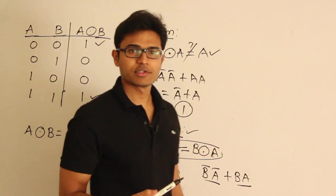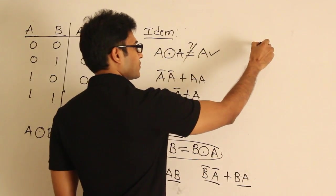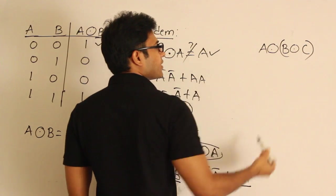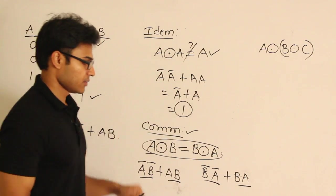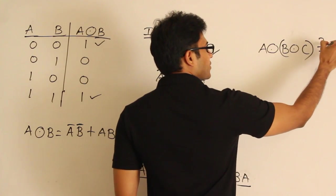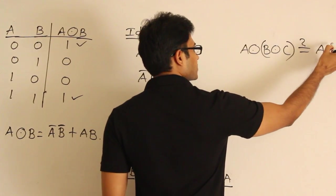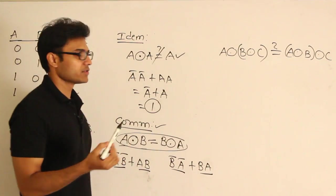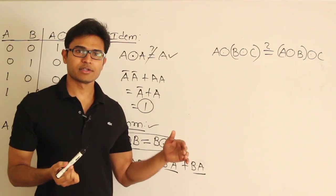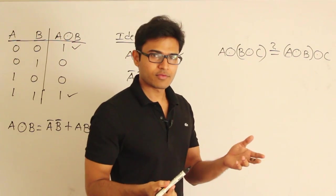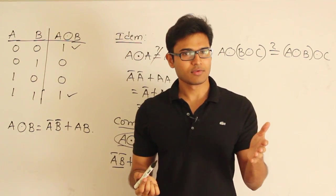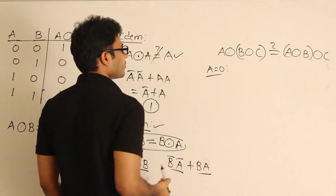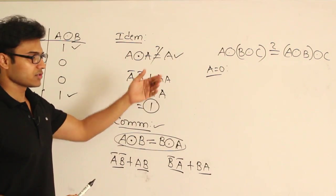Now let's check whether Exclusive NOR is associative. Associative means (A XNOR B) XNOR C should equal A XNOR (B XNOR C). Instead of constructing the full truth table, we can use a shortcut: substitute A=0 and A=1 on both sides and check whether we get equal functions. If they match for both values, the property holds.